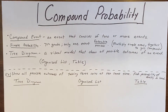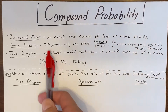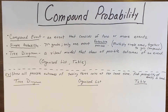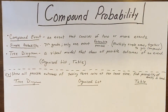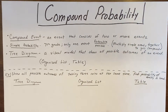In eighth grade we do what's called compound events. A compound event is an event that consists of two or more events. So now we're going to flip two coins and find the probability that they both land on heads, or one's heads and one's tails. There are different models we can use to show all possible outcomes, and from those we choose the favorable outcomes to give us our probability — a tree diagram, an organized list, and a table. A table and an organized list are pretty much the same thing, just organized differently.